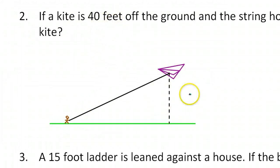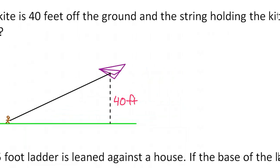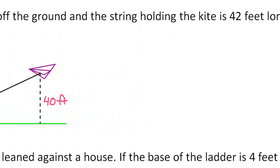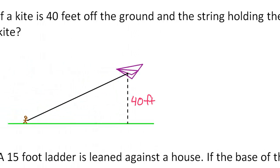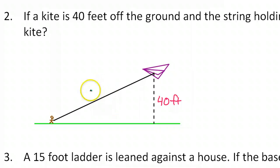The kite is 40 feet off the ground, so this height right here is 40 feet. And the string holding the kite is 42 feet long, so the string here is 42 feet long.